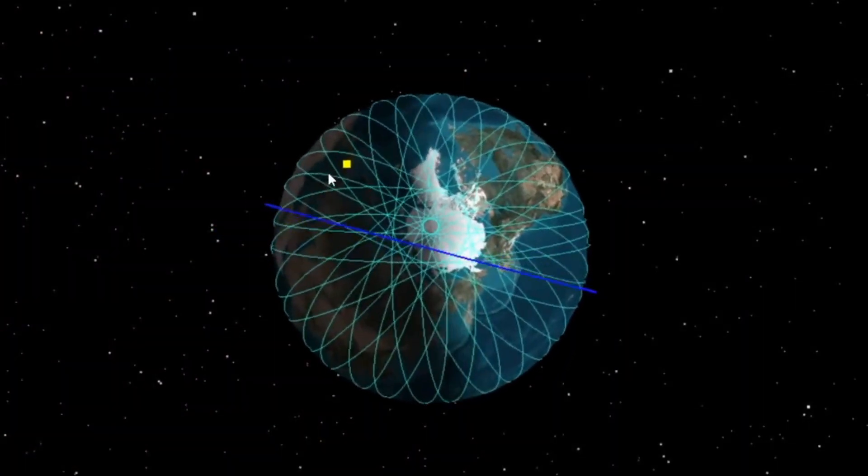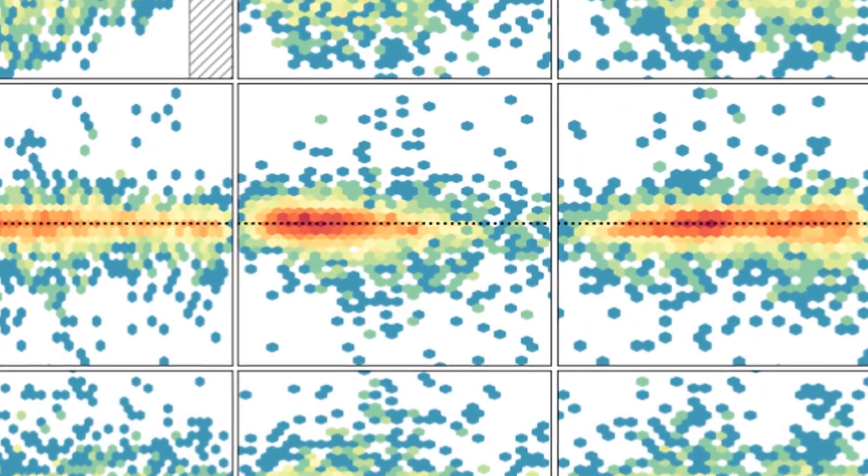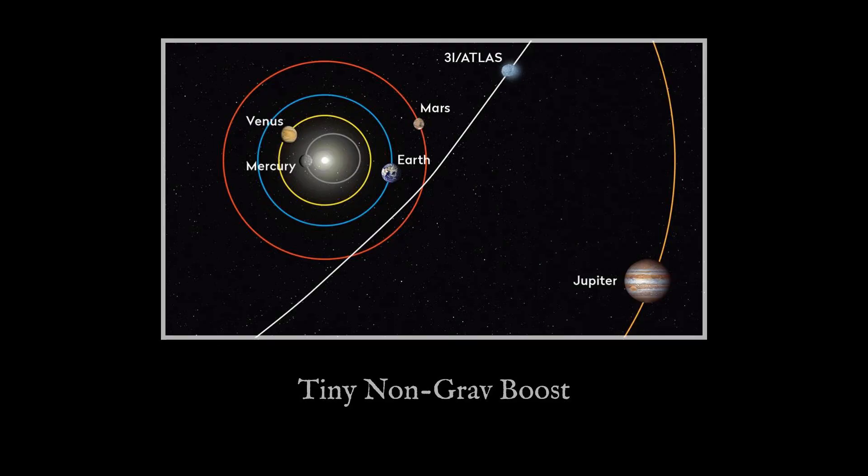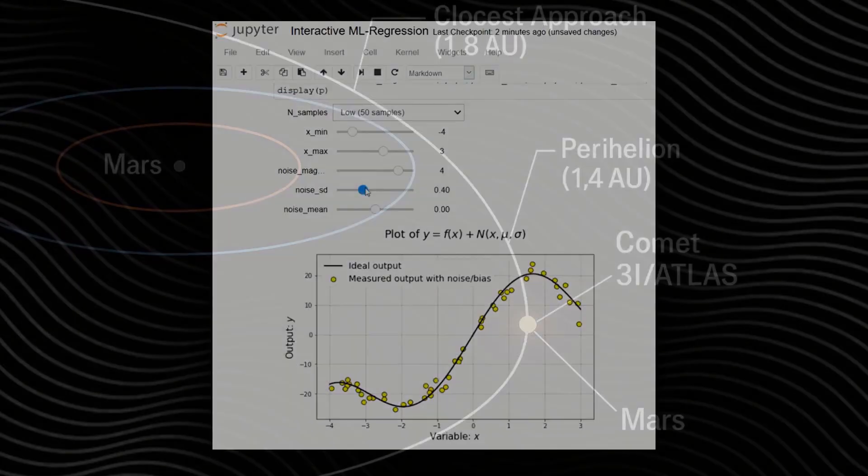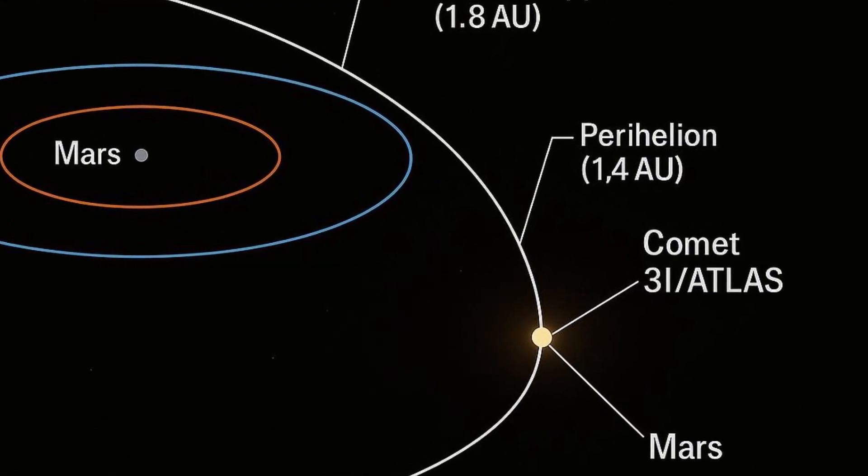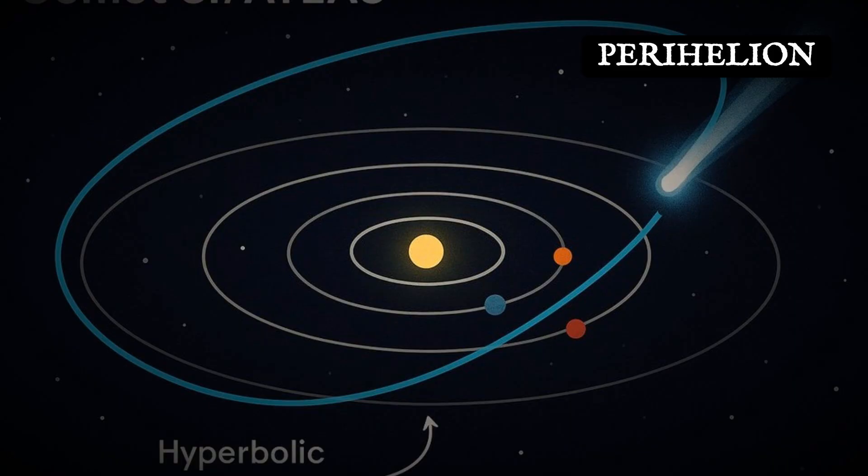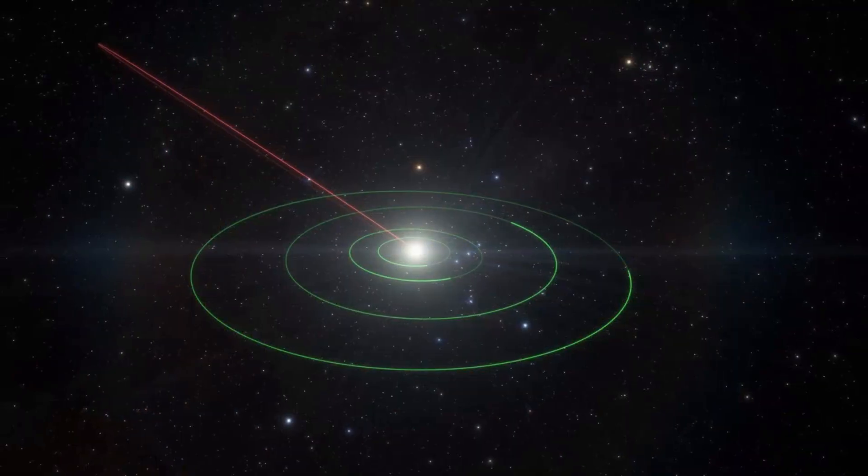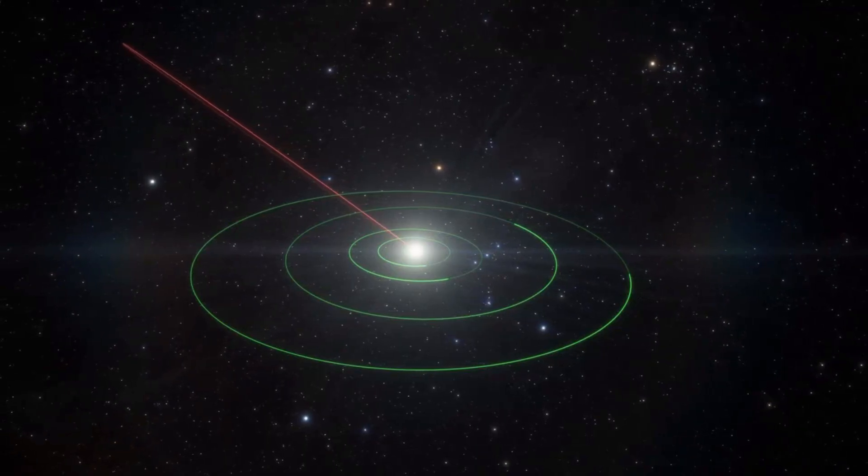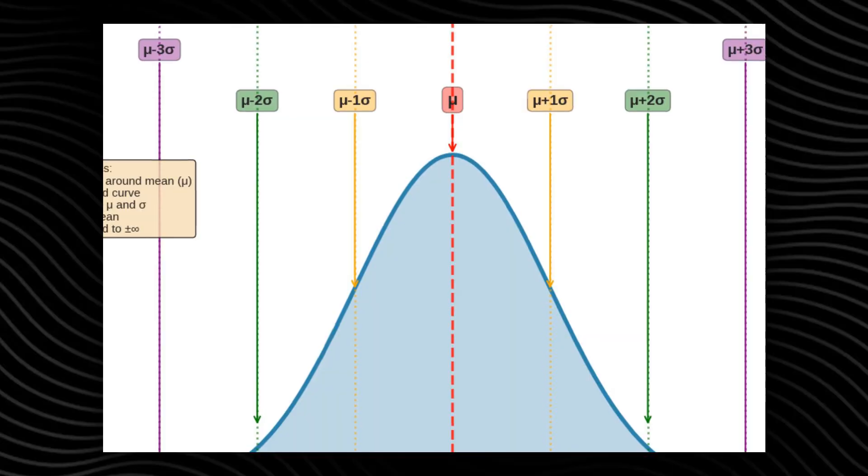When only gravity was used to model the trajectory, the fit left a noticeable error. Adding a small, persistent, non-gravitational acceleration to the model sharply reduced that error, improving the fit to the observed data. The timing of this anomaly centers on the perihelion passage, when 3I Atlas was closest to the Sun. The improvement in orbital fit is not subtle. By including this extra force, the model's predictive accuracy increased beyond the threshold of random noise or catalogue error.